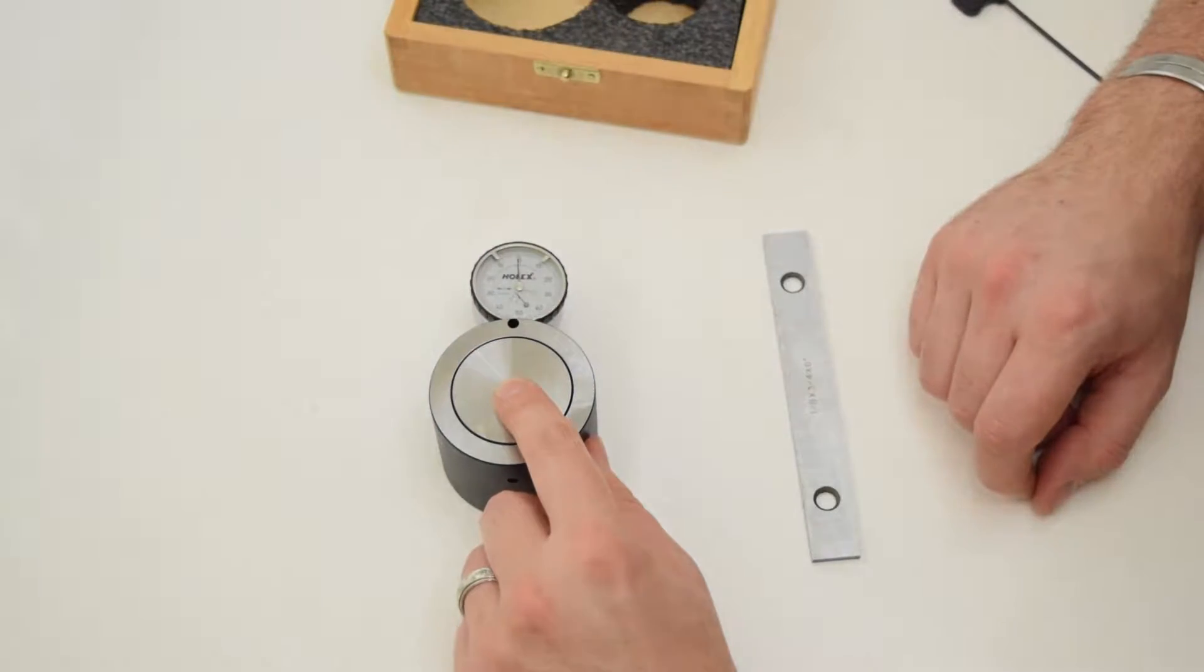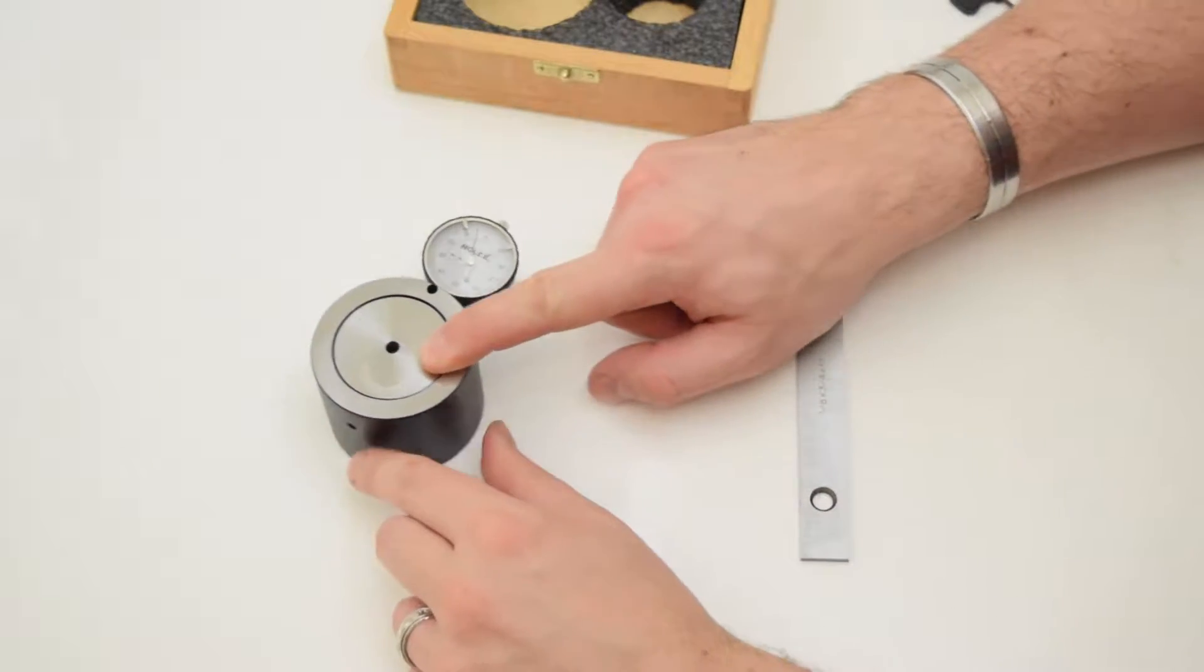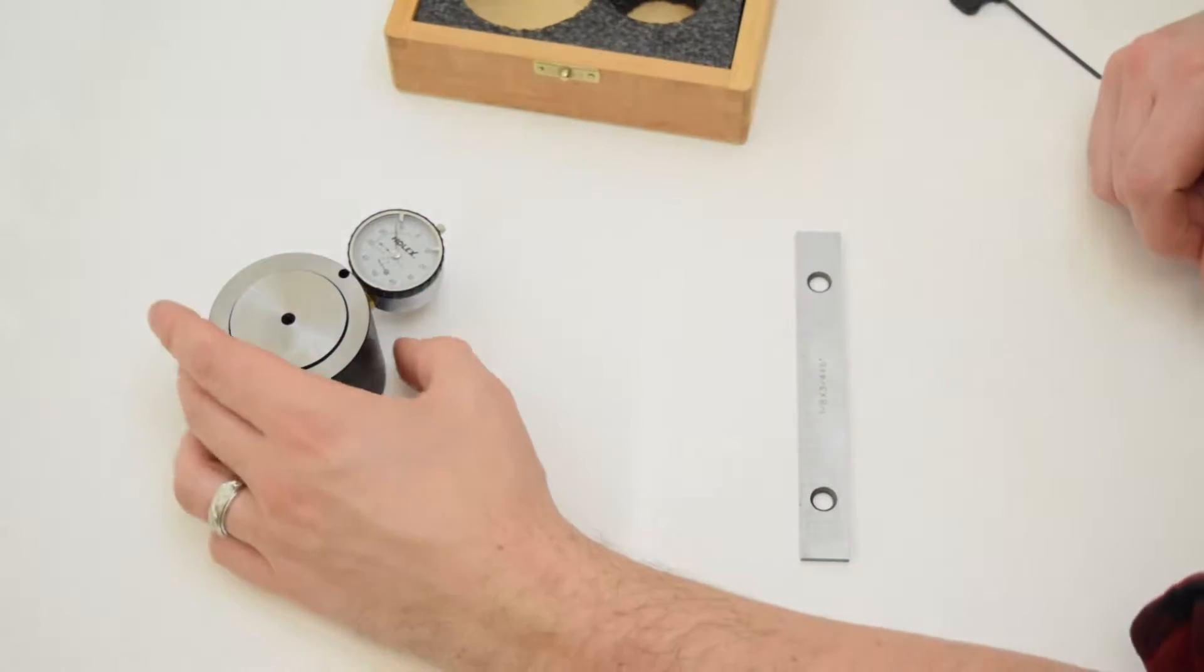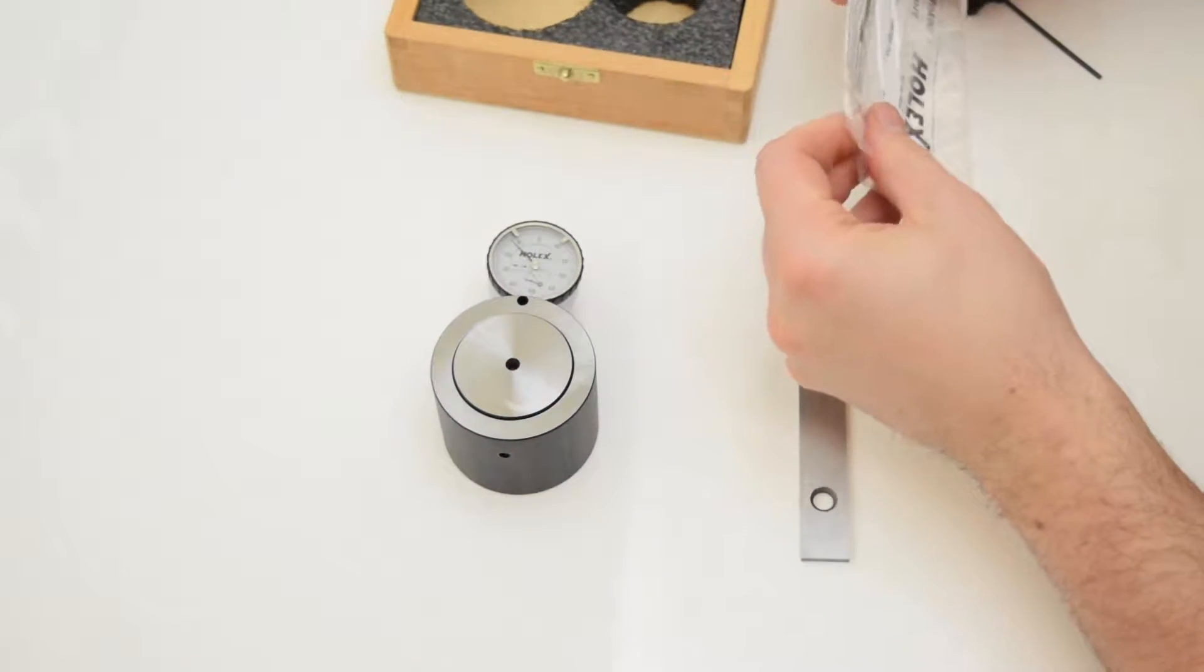Then you can press down further to be able to release the setter away from the tool. The tool is left 50mm above the table or workpiece and you're good to go.